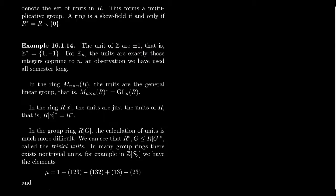For Z_N, the ring of modular arithmetic mod N, we've talked about the group of units Z_N-star, which consists of all integers coprime to N. We've studied this group extensively. If N has very few divisors there will be many units inside Z_N. In fact, if N is prime, then Z_N is actually a field, so everything is a unit except zero.